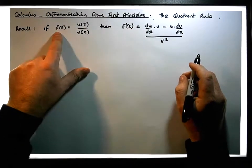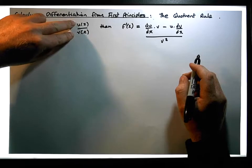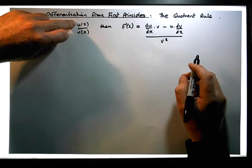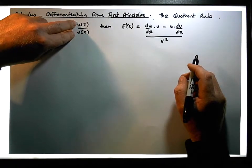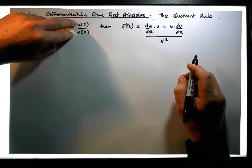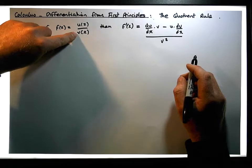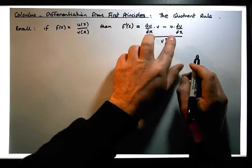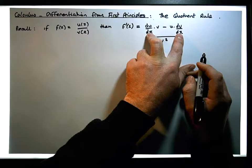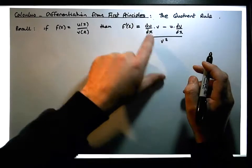So the derivative of this function can be calculated by looking at the numerator and denominator of the quotient, differentiating both of them separately — finding the derivative of u with respect to x and the derivative of v with respect to x — and then using those values to calculate this expression.